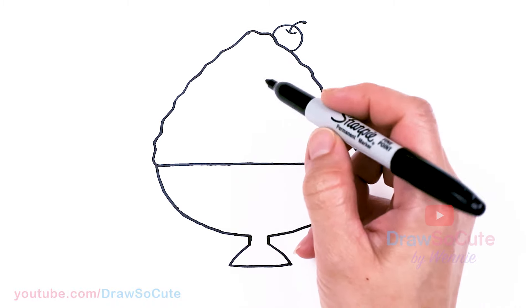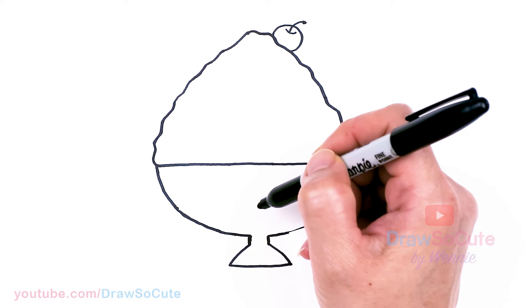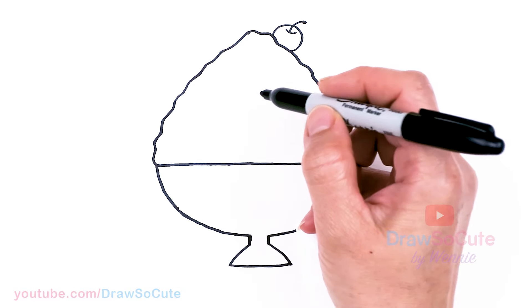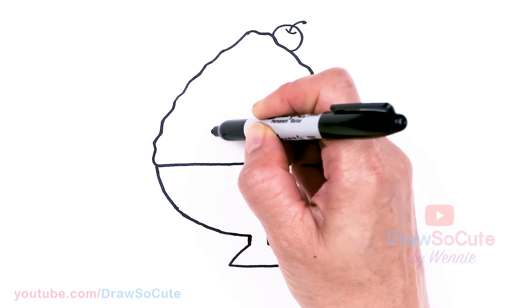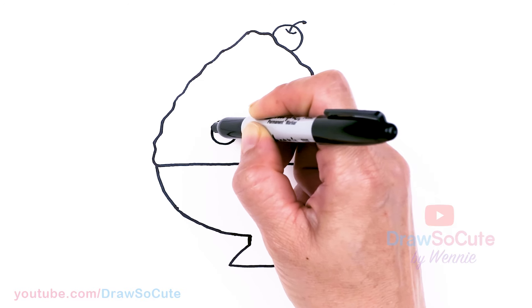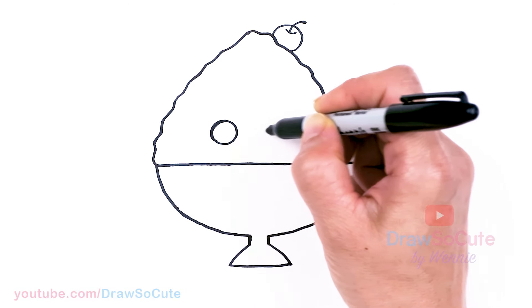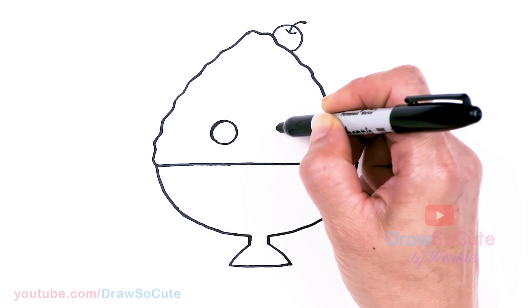Let's come back to the bottom, and we're going to draw some eyes to make this a Draw So Cute shaved ice. I'm going to say about right here, towards the bottom, I'm going to draw a circle for some Draw So Cute eyes. So one and then another one say about right here.